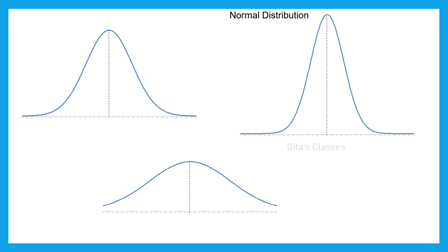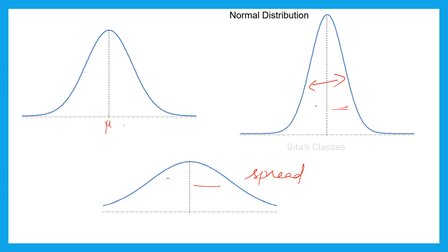What about sigma? Sigma is the standard deviation — how much the distribution deviates from the mean. If sigma is small, the curve will be more peaked, because the deviation is less. If sigma is large, the curve will become flattened or spread out more. So sigma decides the shape of the curve. Therefore, sigma is called the spread parameter and mu is called the location parameter.